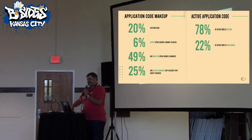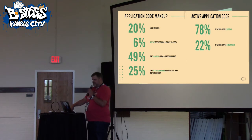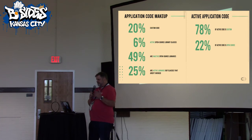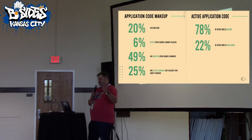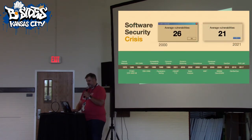49% is inactive open source libraries — we're pulling a bunch of stuff in and none of it's getting used. And then 25% of it is active libraries and classes that aren't even touched. So if you really break it down, 78% of the code in our applications is active custom code. A lot of times we're like, 'well only 20% of it's custom code,' but all that's being used for the most part.